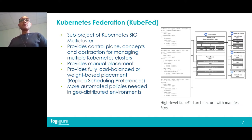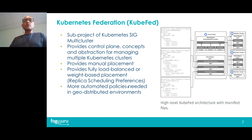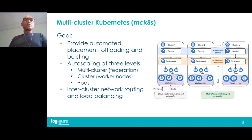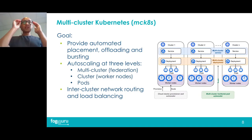But Kubernetes Federation lacks other automated policies such as proximity-aware placement, and it lacks offloading and bursting capabilities that are required in multi-cluster geodistributed environments. That is where MCKETES, or Multi-Cluster Kubernetes, comes in.